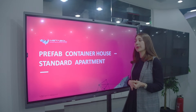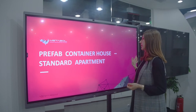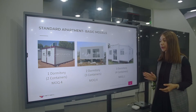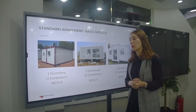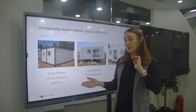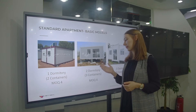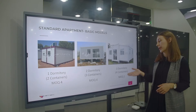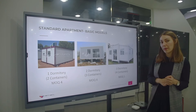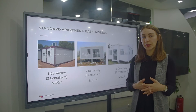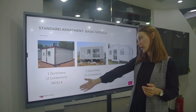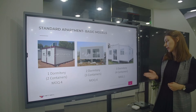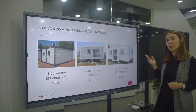Now we are going to talk about the standard apartment. There are three types: one bedroom, two bedroom, and three bedroom. Two containers are used for a one-bedroom apartment, three containers for a two-bedroom, and four containers for a three-bedroom. The minimum order quantity (MOQ) for one-bedroom and two-bedroom is four sets, and for the three-bedroom apartment the MOQ is one set.